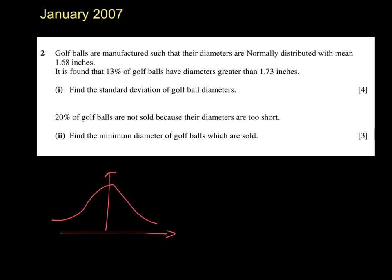So we have a normal distribution. The mean is 1.68 and 13% of golf balls have diameters greater than 1.73.